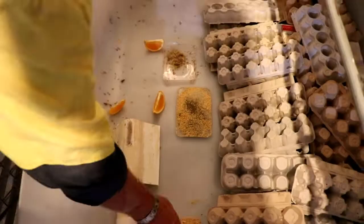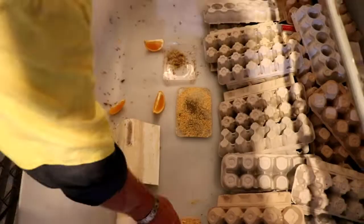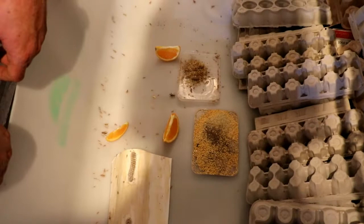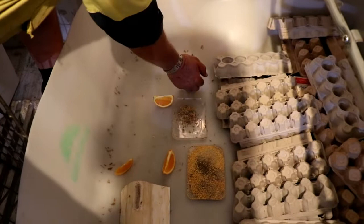All set, all in their new home. Now these crickets will be in this box for the rest of their lives, anywhere up to six months. And in two to three weeks time the crickets will start breeding and the life cycle will begin all over again.